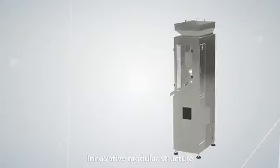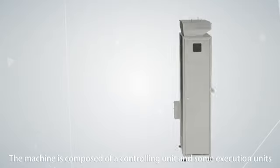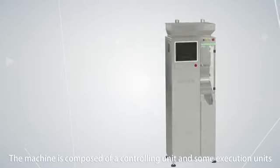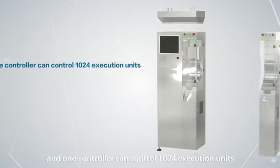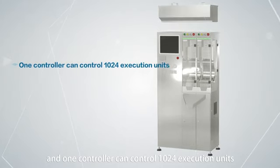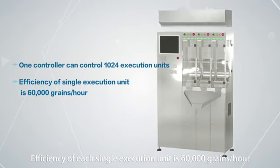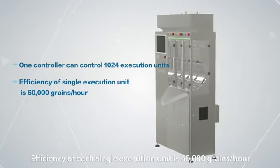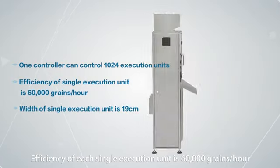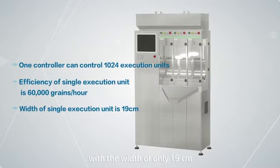Innovative modular structure, the machine is composed of a controlling unit and some execution units, and one controller can control 1024 execution units. Efficacy of each execution unit is 60,000 grains per hour, with a width of only 19 centimeters.